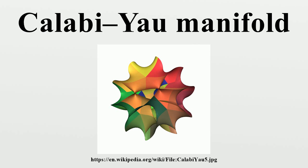Calabi-Yau manifolds are complex manifolds that are generalizations of K3 surfaces in any number of complex dimensions. They were originally defined as compact Calabi-Yau manifolds with a vanishing first Chern class and a Ricci flat metric, though many other similar but inequivalent definitions are sometimes used.